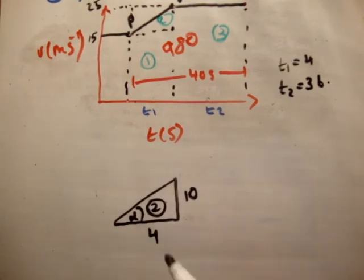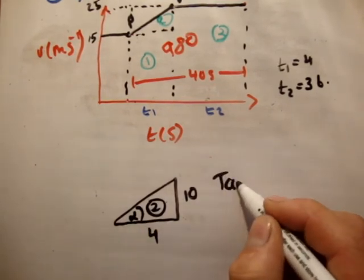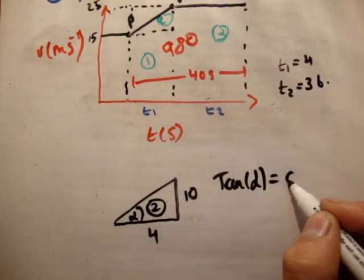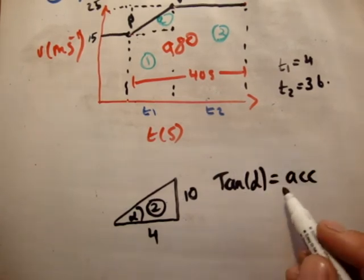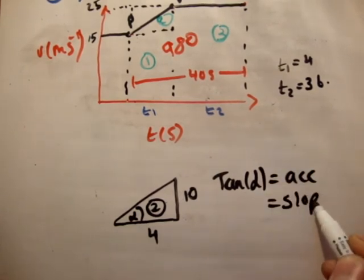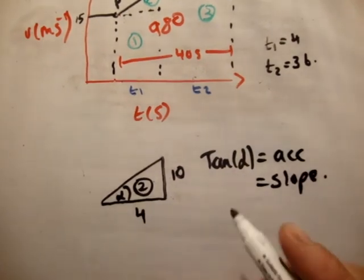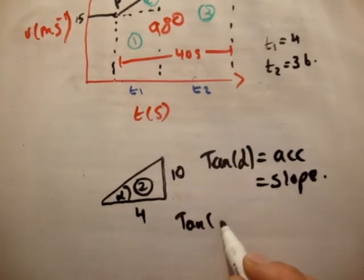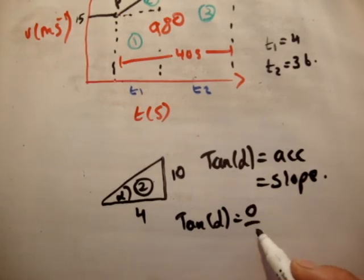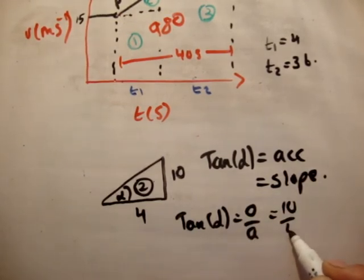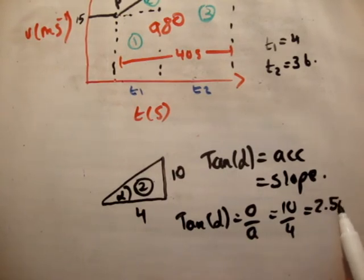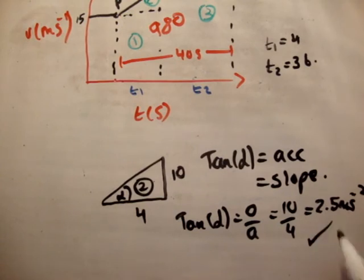And I'm going to call this angle here alpha. Therefore, tan alpha is equal to the acceleration is equal to the slope. They're the same thing. So we'll say tan alpha is equal to opposite over adjacent is equal to 10 over 4 is equal to 2.5 meters per second squared. Is that correct? Yes, it is.